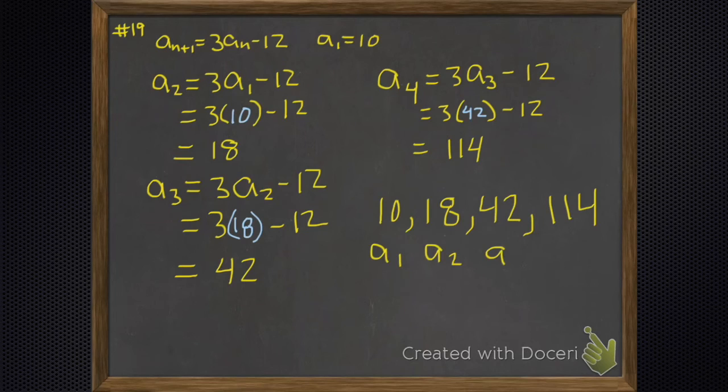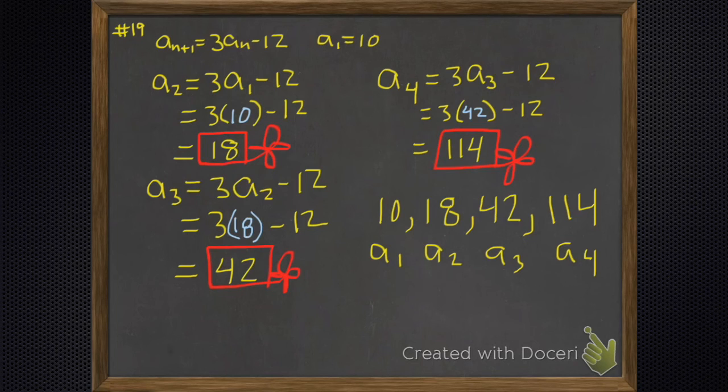So then our sequence is 10, 18, 42, and things are getting out of hand with 114. And we did what they asked. We found the first four terms of our sequence. It's all over but the box and flower.